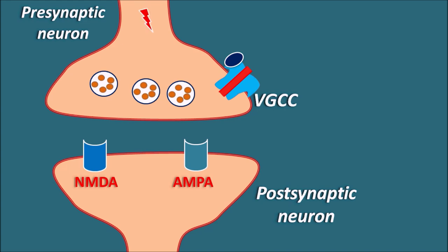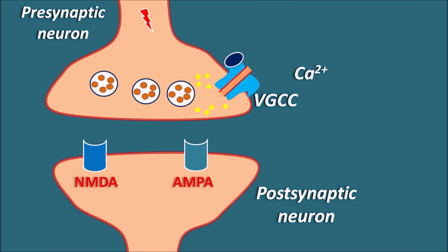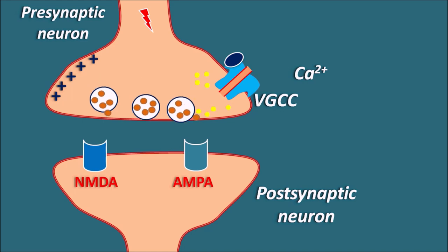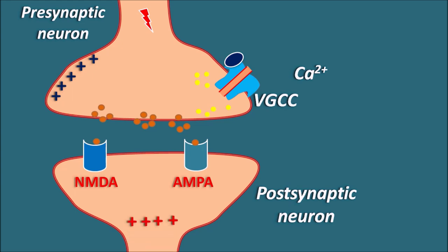Whenever an impulse reaches the presynaptic neuron, these voltage-gated calcium channels are activated. Calcium enters through the voltage-gated calcium channels, producing depolarization of the presynaptic neurons. Once the presynaptic neurons are depolarized, they promote the release of neurotransmitters from the storage vesicles. These neurotransmitters then act on the postsynaptic receptors, producing depolarization or excitation within the postsynaptic neuron. The release of neurotransmitters from the presynaptic neuron is stimulated by voltage-gated calcium channels.